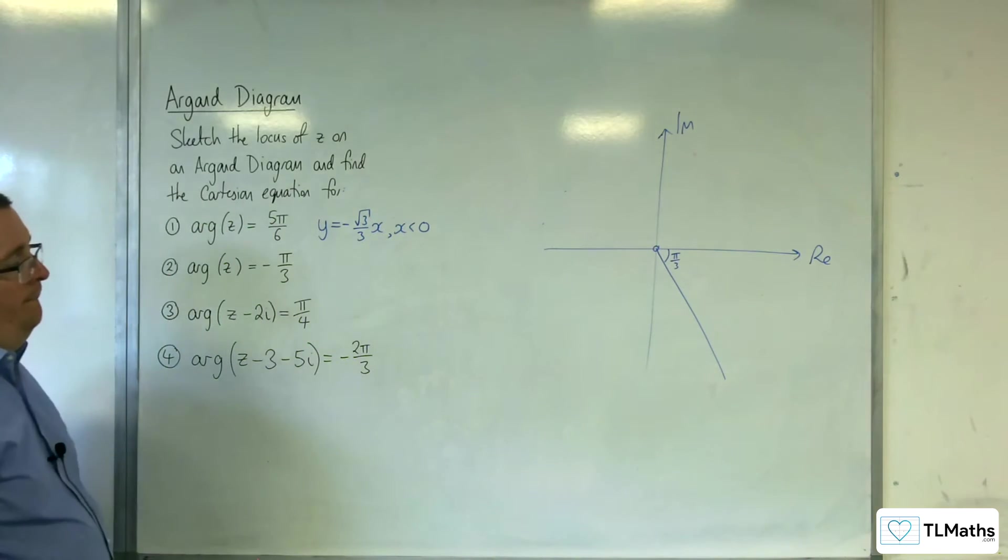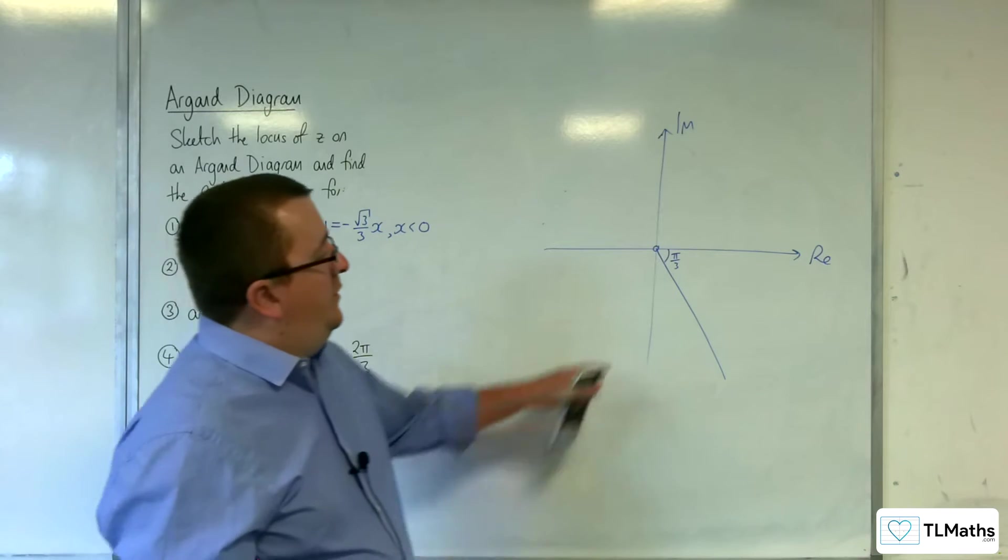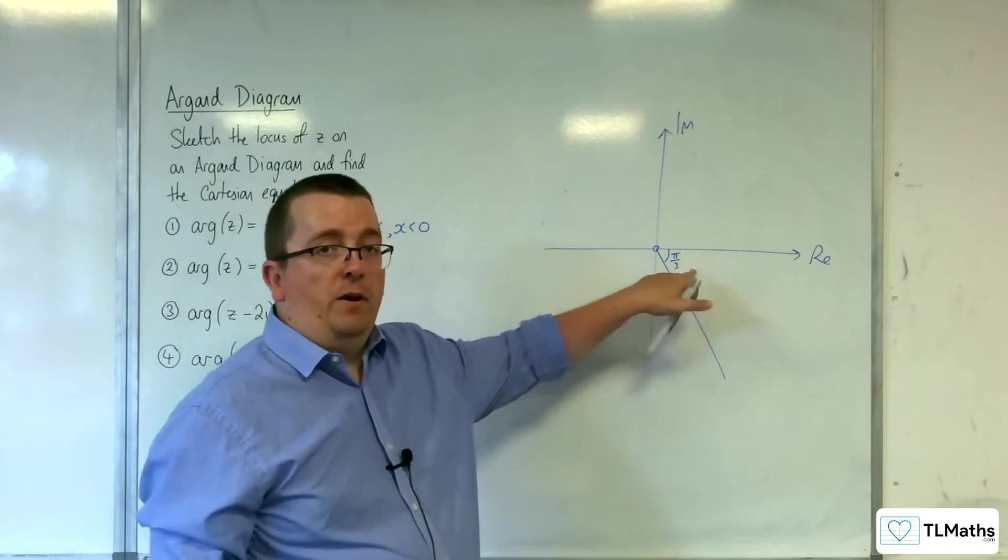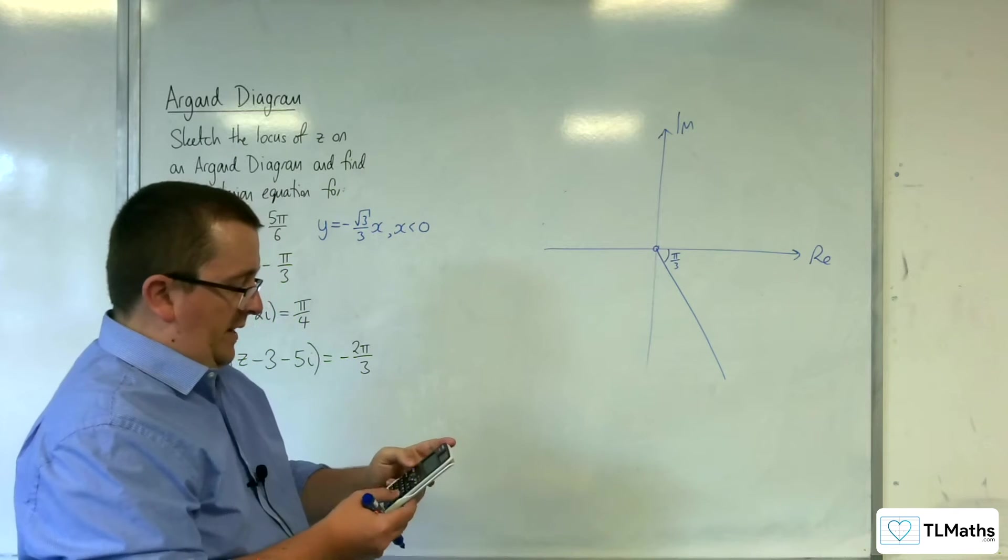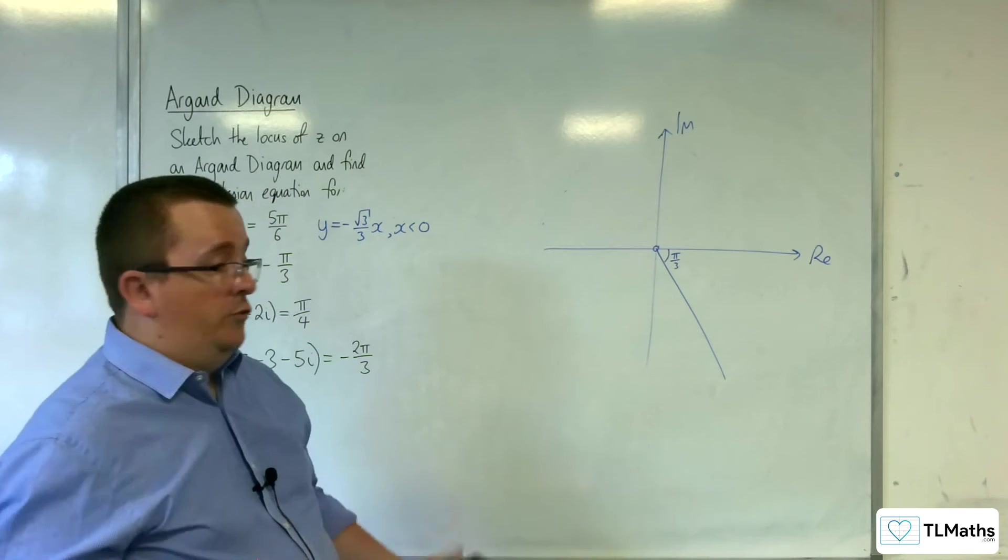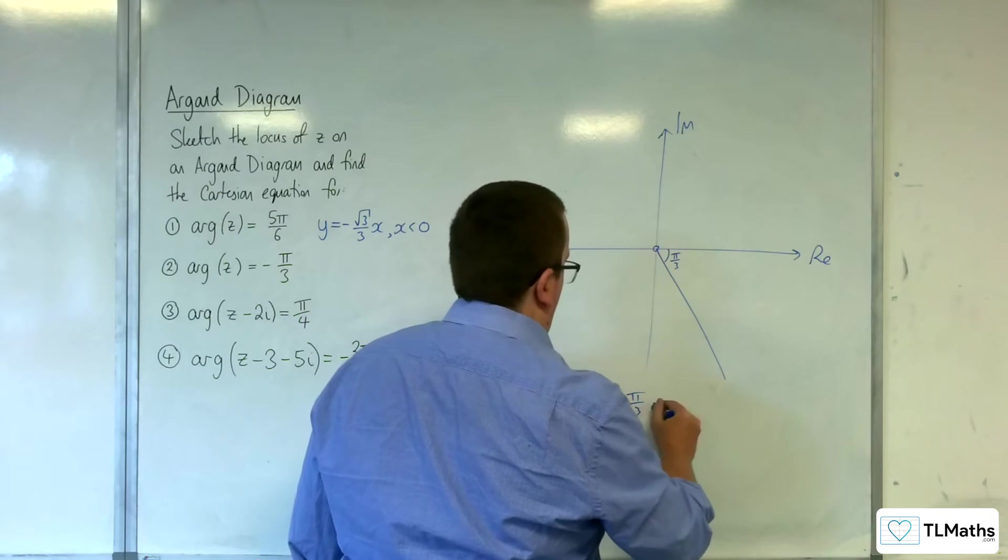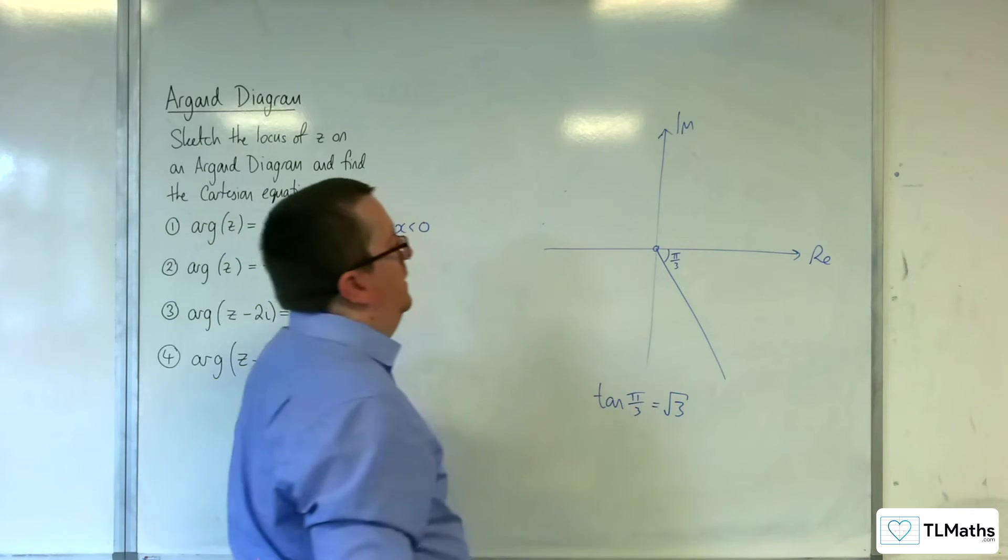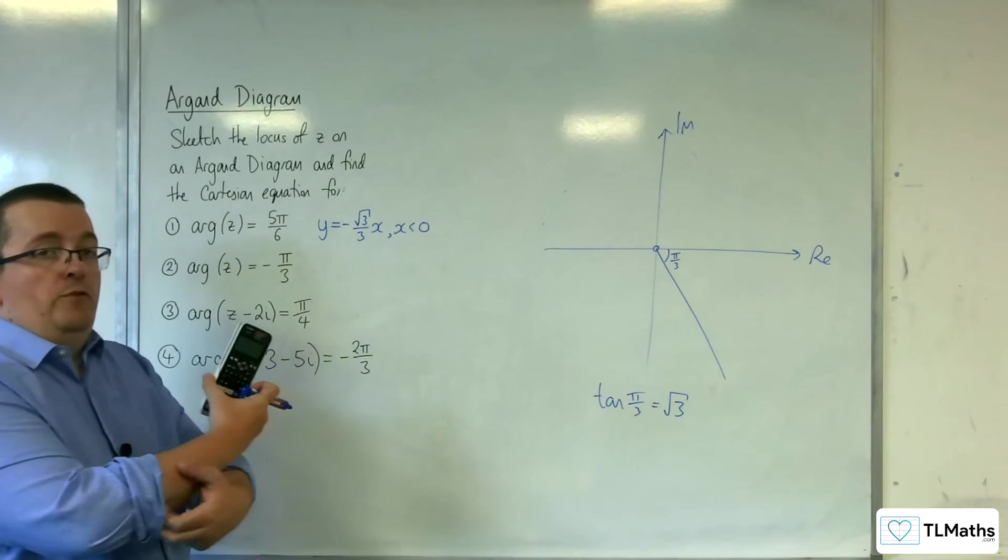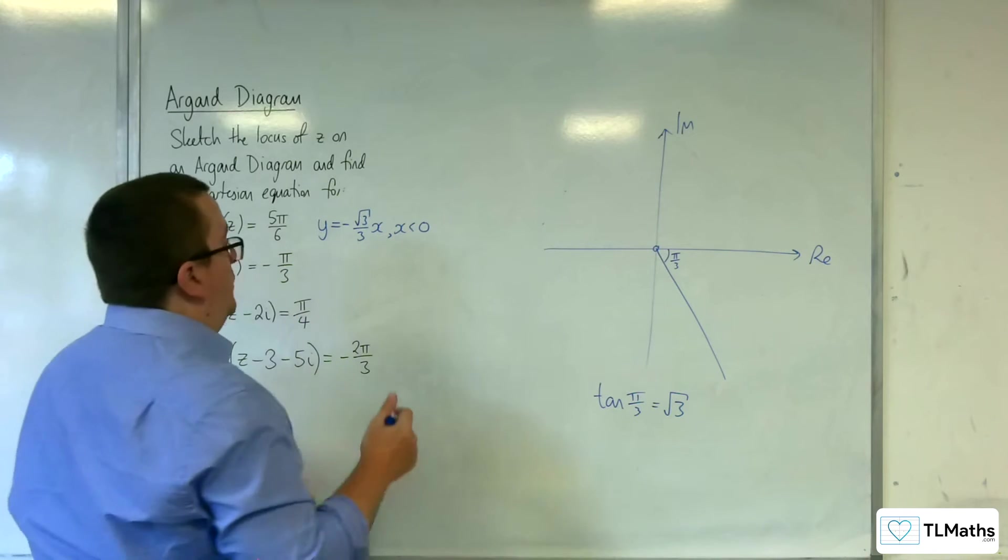So, what I want to do then is find tan of π over 3. Tan of π over 3, which is √3. Obviously, the gradient is not √3. It's negative √3. Going through the origin.